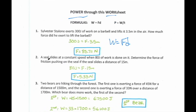Number two. A seal slides at constant speed when 80 joules of work is done on it. Determine the force of friction pushing on the seal if the seal slides a distance of 15 meters. This is another work equals force times distance problem because we know the amount of work that was done on the seal, that's 80 joules. We're trying to determine the force, so I don't know F yet, and we do know the seal slides a distance of 15 meters, so we're left with just force to solve for. When we plug it in, we get 80 divided by 15 to get F by itself, equals 5.33 newtons, or 5.3 newtons would be fine as well.